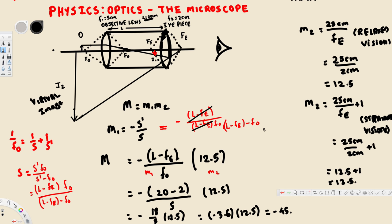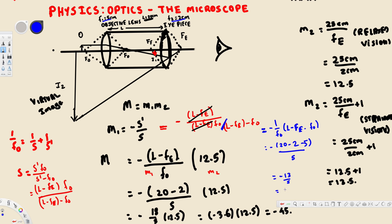Now computing M1 using the actual object distance: M1 equals negative (L minus FV) divided by the object distance expression, which simplifies to negative (L minus FV minus F-naught) divided by F-naught. Plugging in L equals 20, FV equals 2, and F-naught equals 5: M1 equals negative (20 minus 2 minus 5) divided by 5, which is negative 13 over 5, giving negative 2.6.